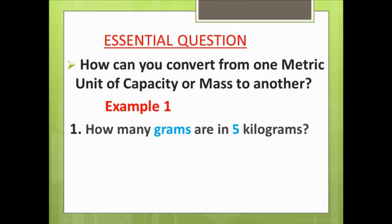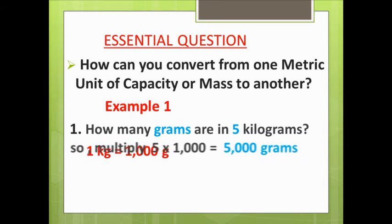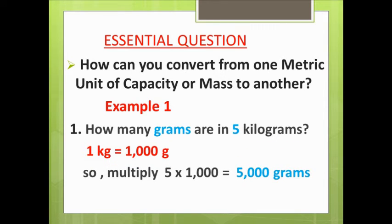How many grams are in five kilograms? One kilogram equals one thousand grams, so multiply five times one thousand and you get five thousand grams.